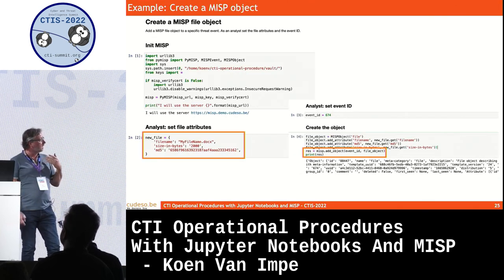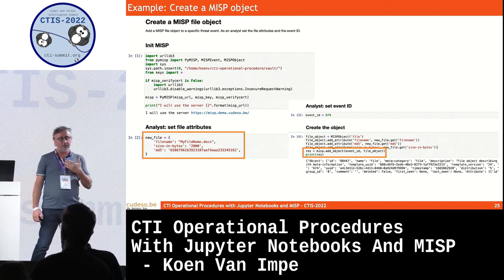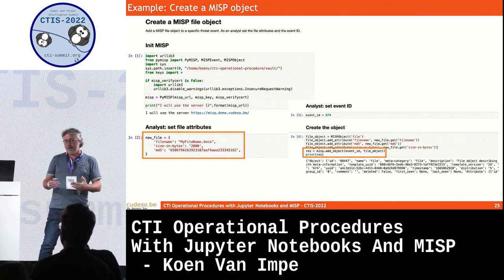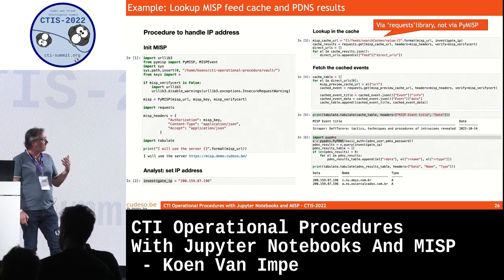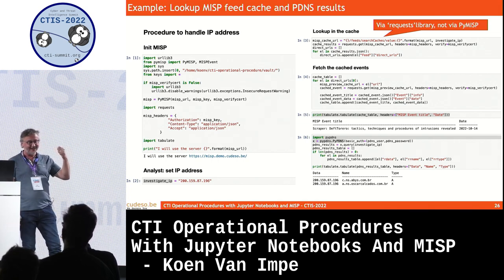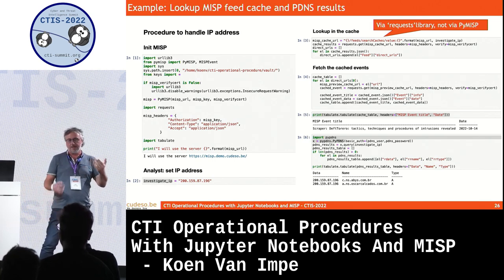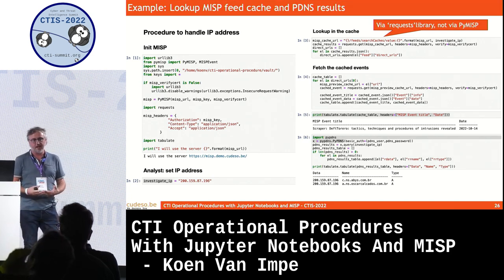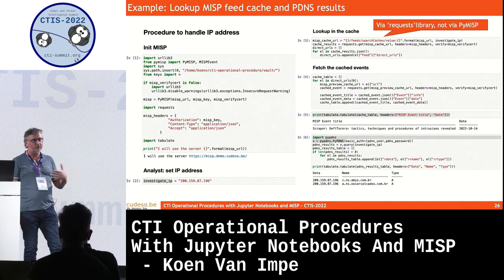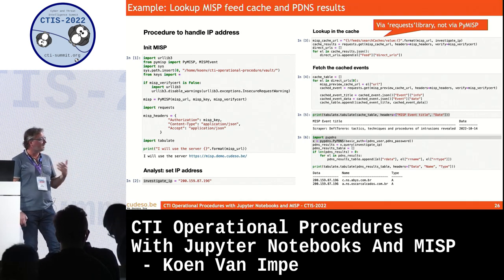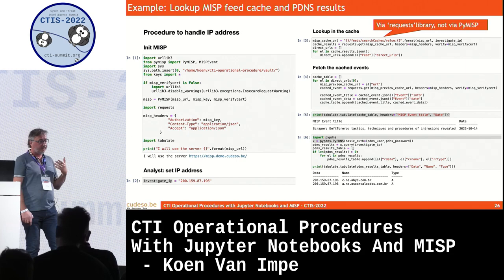This is another example for creating an operational procedure for creating a MISP object — one of the producer examples — again splitting out the variable section from the actual code manipulation. The third example uses other libraries apart from PyMISP. PyMISP libraries are included by the skeleton script, but you're not limited to only those. For instance, I use the requests library to do something not immediately accessible through PyMISP, such as looking up IP addresses in the feeds cache.